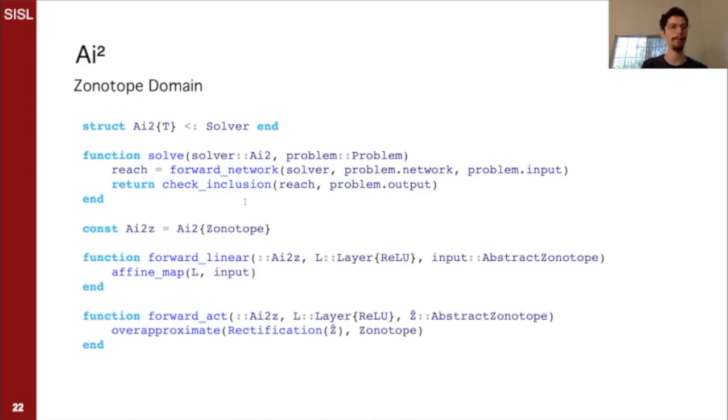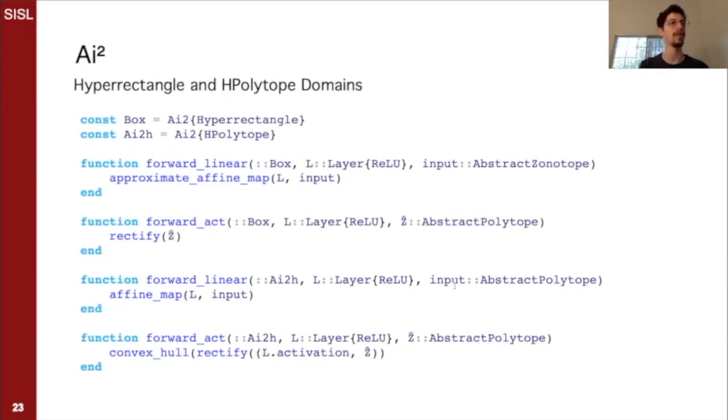For the zonotope domain, it's quite simple, as you see, two one-liners. The linear step is an affine_map straight out of lazy sets, and the activation step is to over-approximate the rectification, which is another word for ReLU, and over-approximate as a zonotope. Both of these straight out of lazy sets. And that's it. This is the zonotope domain of AI². And with a bit of multiple dispatch, we can also define the hyper-rectangle and H-polytope versions, or the polytope versions of AI² just as easily. And so you see this is the entire algorithm of AI² implemented in just a couple of slides.